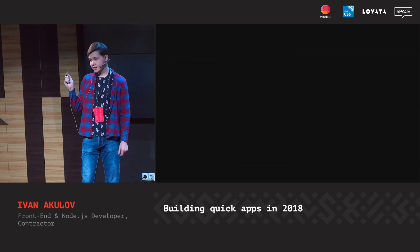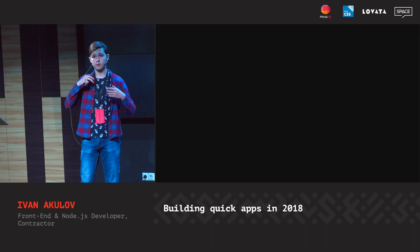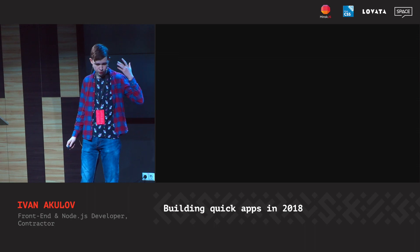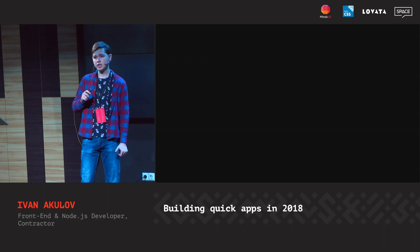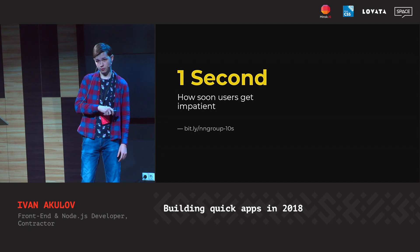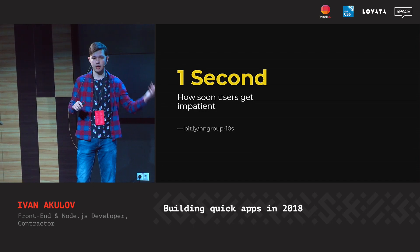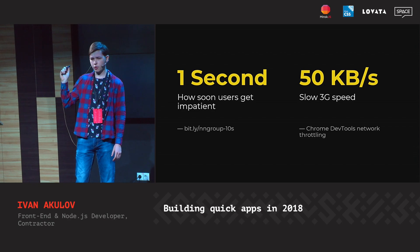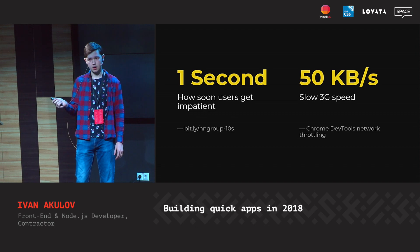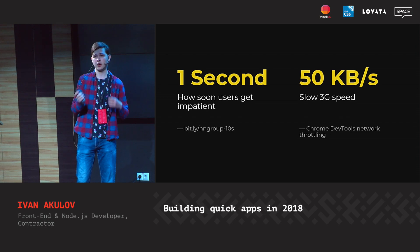So those are the metrics to track. But what numbers should you target for time to interactive and time to first meaningful paint? To answer this, you need to know two things. First, users usually get impatient after one second of waiting — this is true for all kinds of computer tasks. Then, the average slow 3G speed is around 50 kilobytes per second. You want to target slow 3G speed, because most world users still use 2G or 3G.